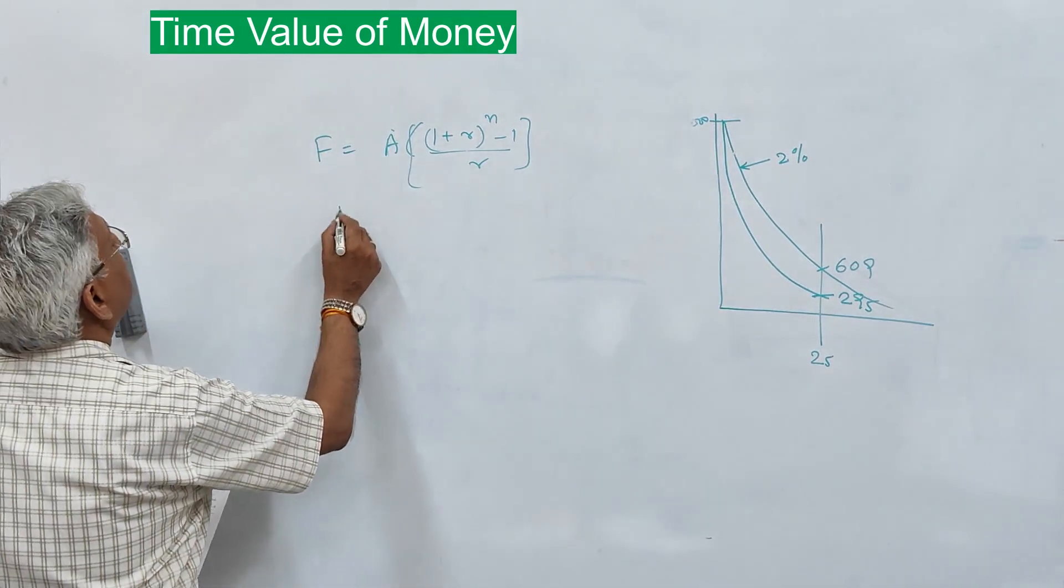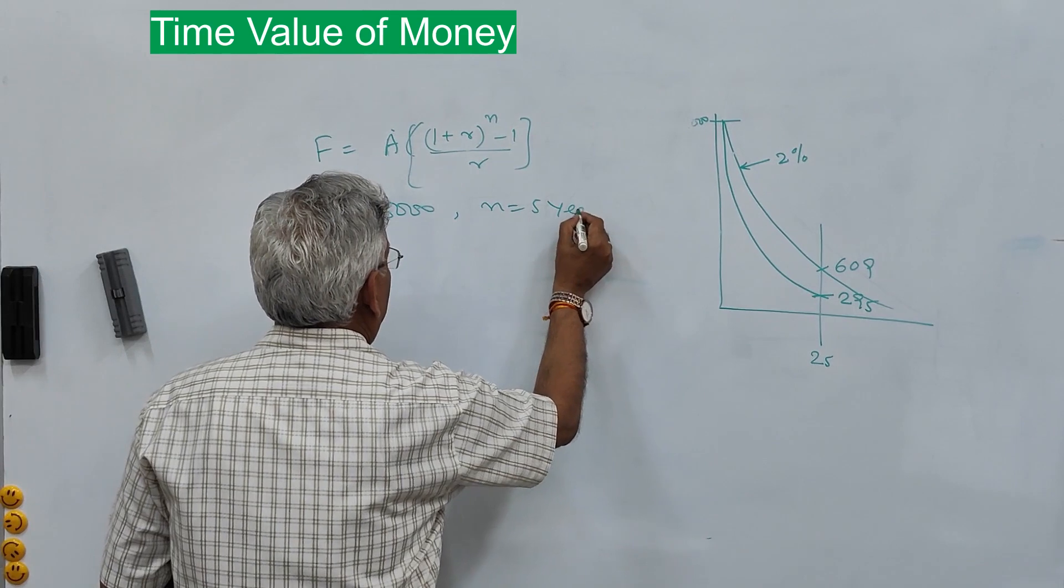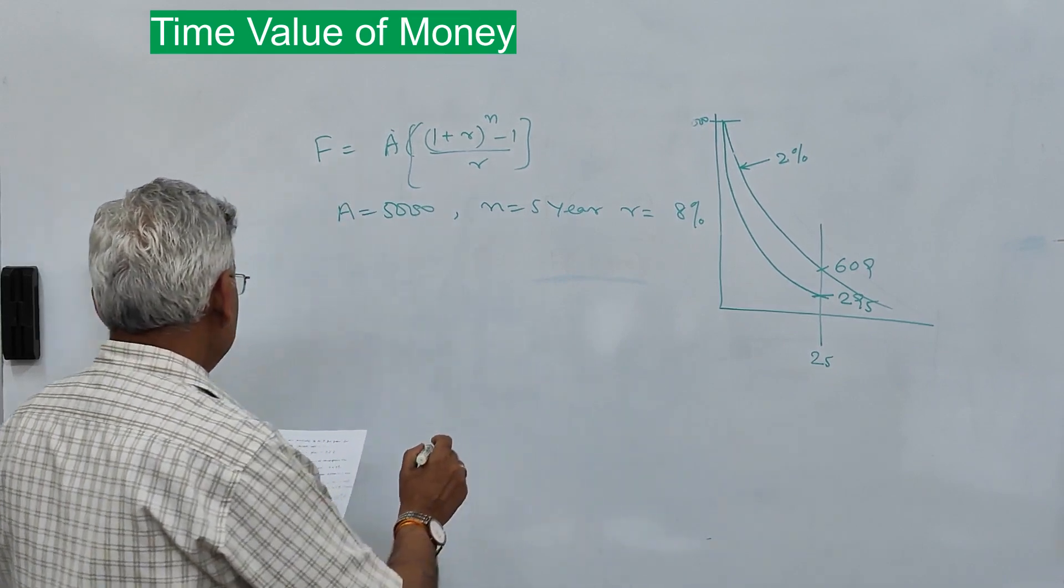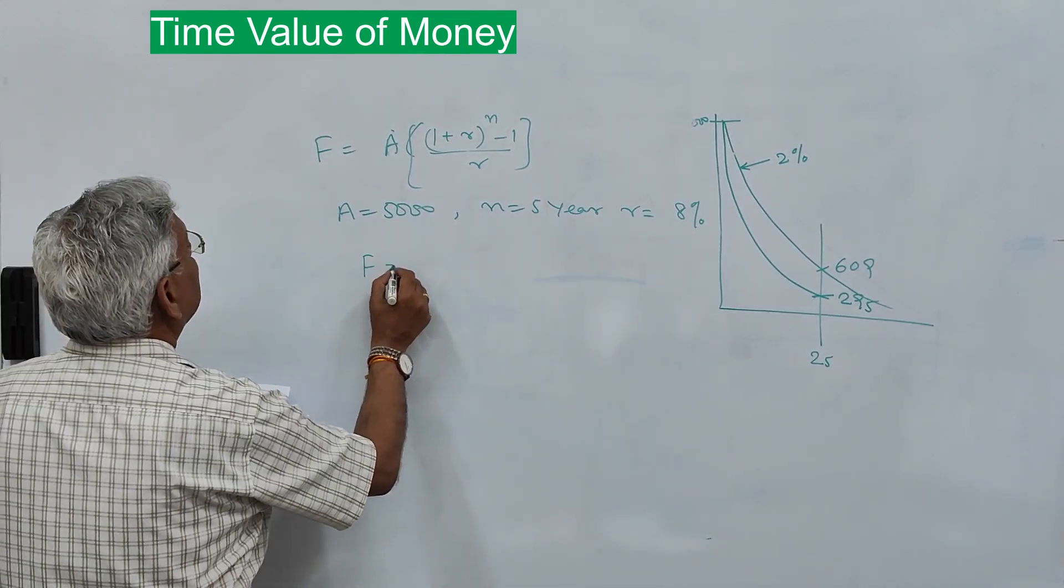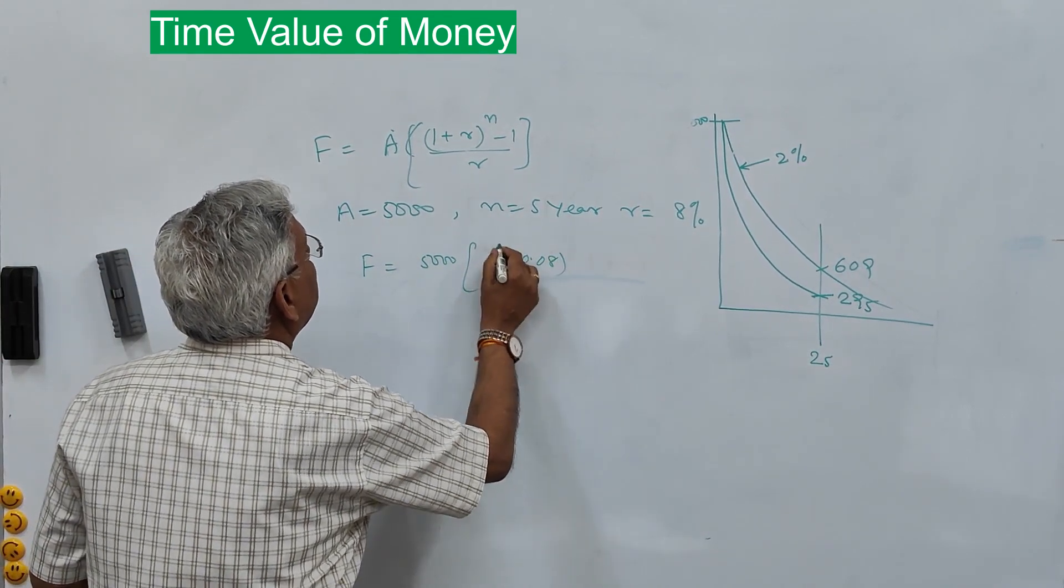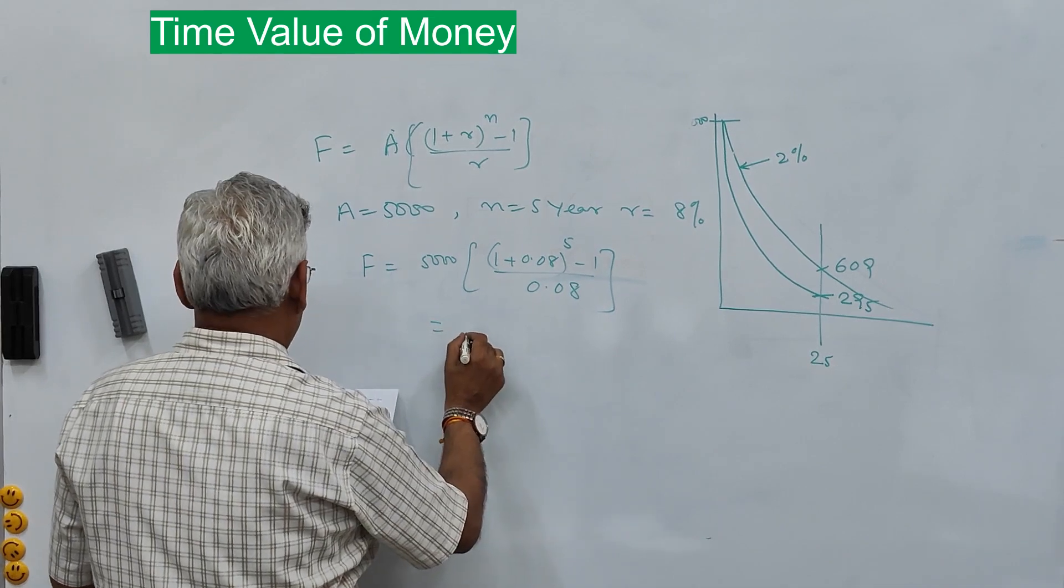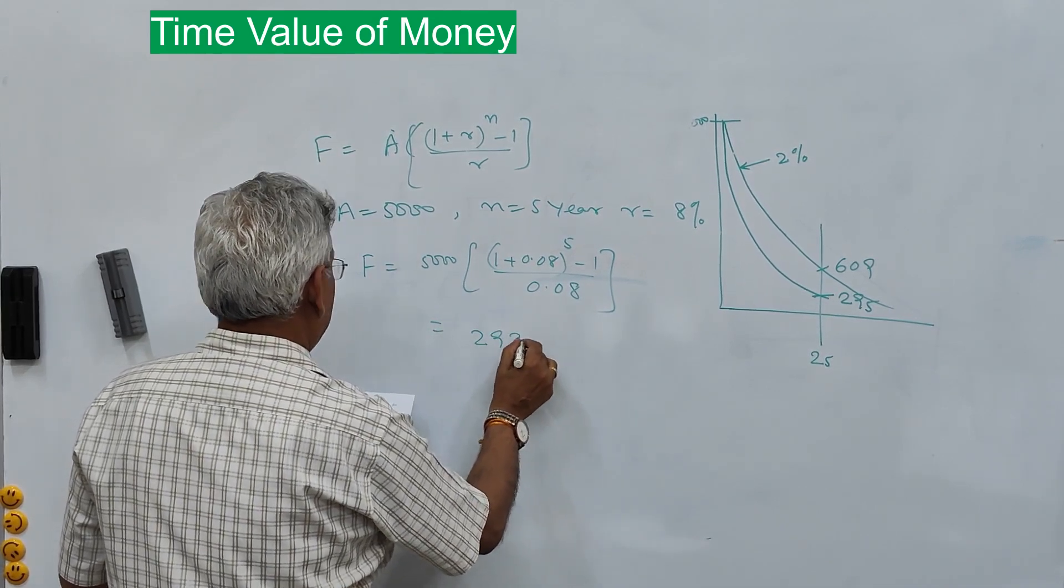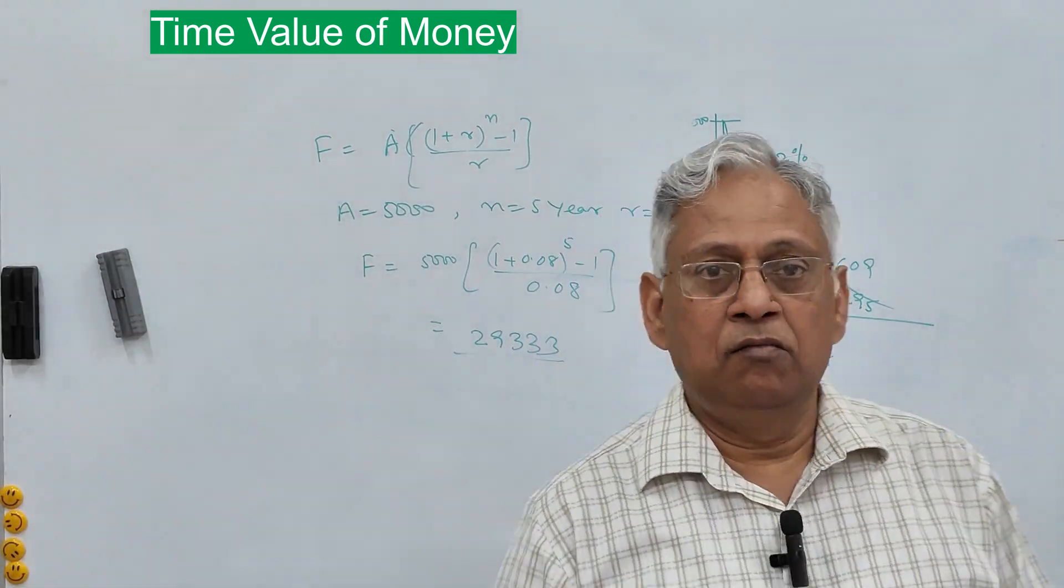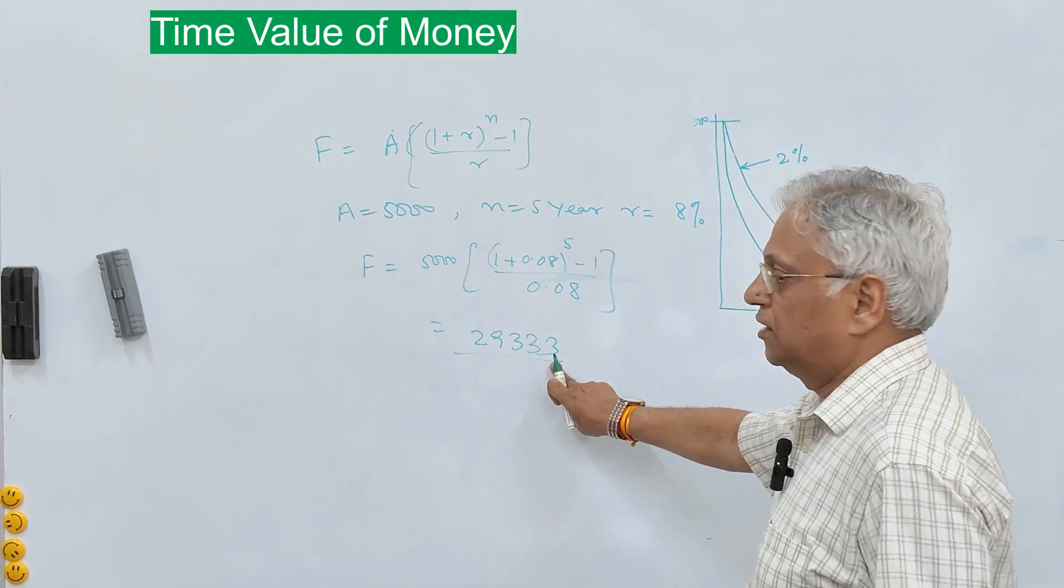If let's say A is 5000, N is 5 years and interest rate is 8%, then this F will be 5000[(1 + 0.08)^5 - 1]/0.08, which equals 29,333. What does it mean? It means you will be paying 5000 every year for 5 years. At the end of 5 years, its value will be 29,333 rupees.